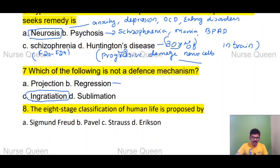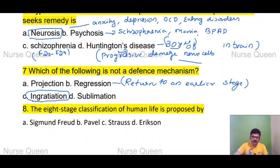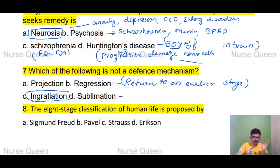Regression is a defense mechanism meaning return to an earlier stage of development. Sublimation is another defense mechanism — it involves converting unacceptable behaviors or impulses into acceptable ones.